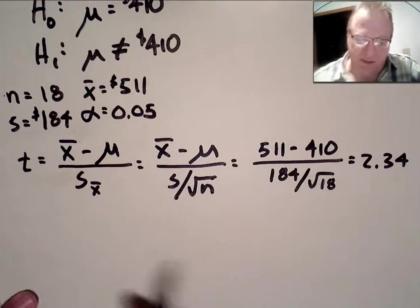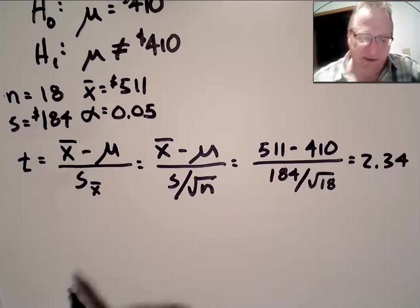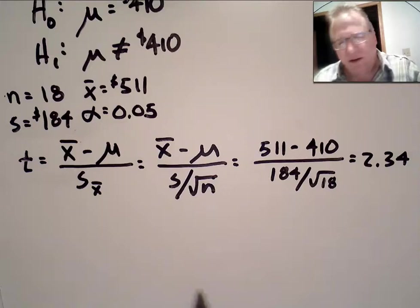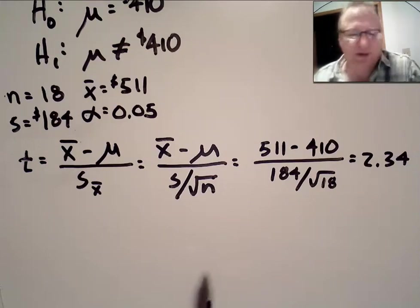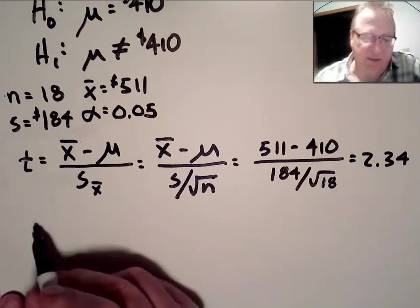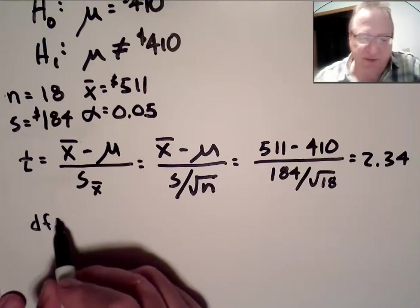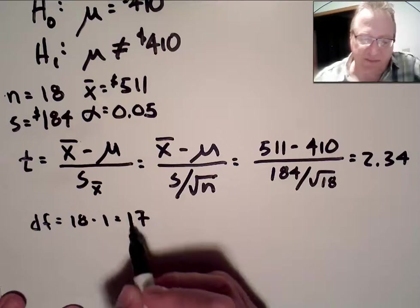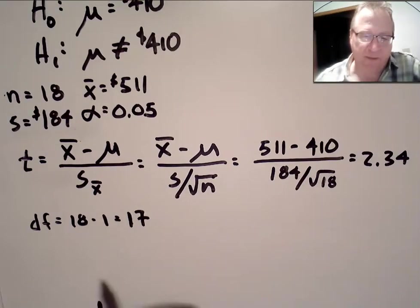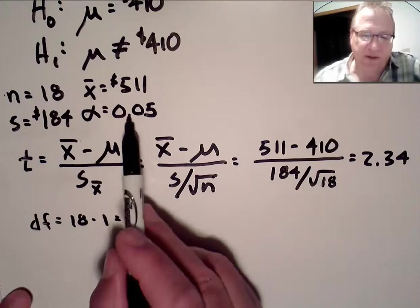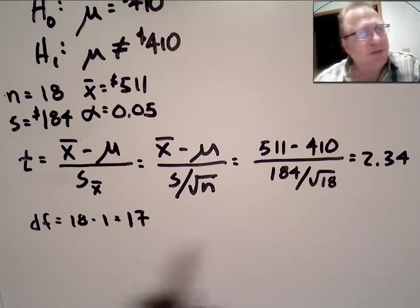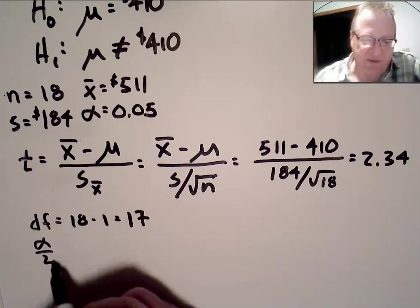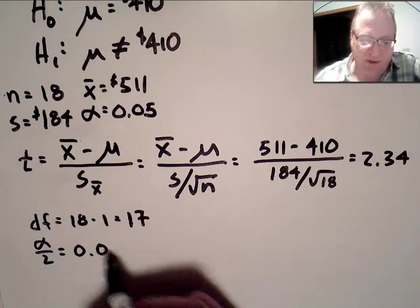Now, we need to find the values that we will compare that to in the student's distribution. So, we have n equals 18, which means the degrees of freedom are 18 minus 1 or 17. Our alpha is 0.05, but recall we had to split that between both tails. So, we're looking at alpha over 2 of 0.025.